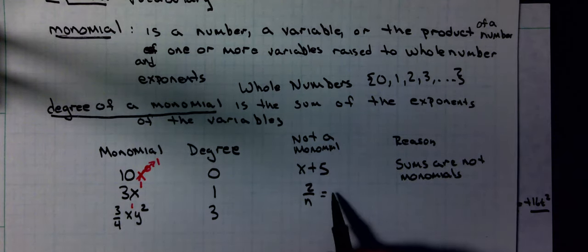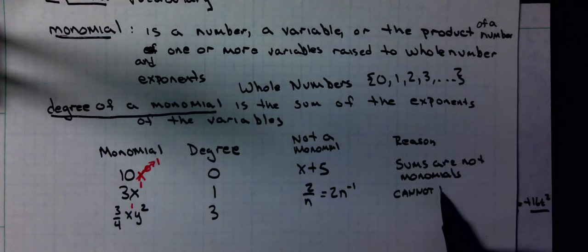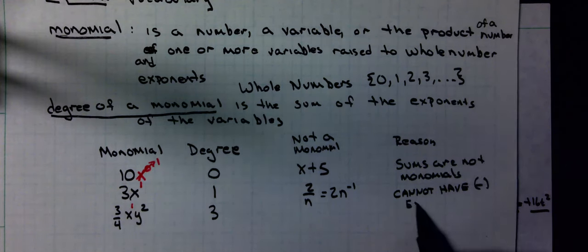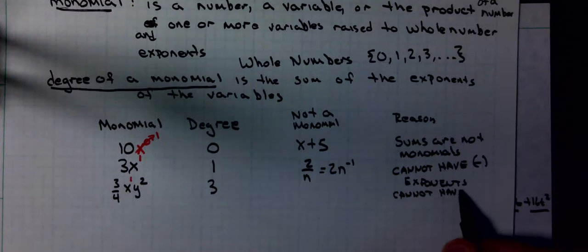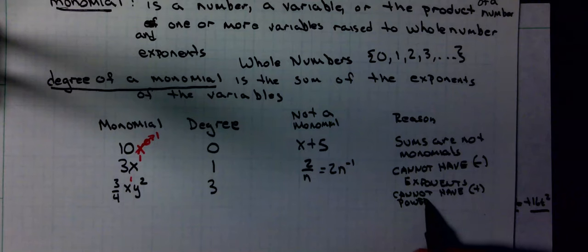2 over n. This is the same thing as 2 times n to the negative 1. Cannot have negative exponents. Or another thing to say: cannot have variables in the denomination with positive powers.